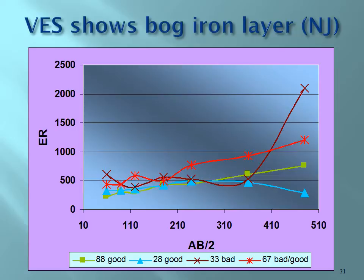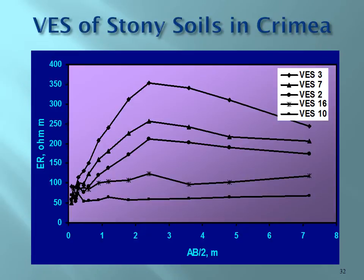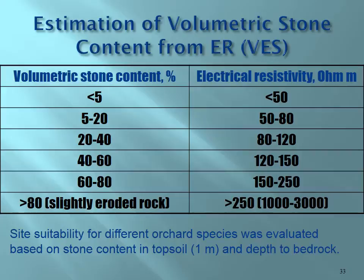When you measure the profiles, you plot the distance between A and B electrodes on the axis — as A-B increases, you reach deeper depths. In the cranberry bed in New Jersey, the vertical electrical sounding profiles showed that at a depth of about one to one and a half meters there is an iron layer, visible as an increase in electrical resistivity — a bog iron layer. Similarly, in Crimea, we created several VES profiles of stony soils, showing how volumetric stone content relates to measured electrical resistivity, and how different orchard species tolerate stony soil conditions.